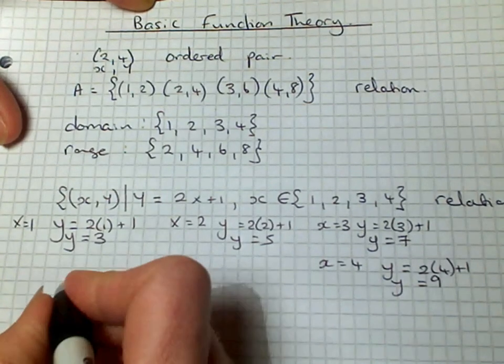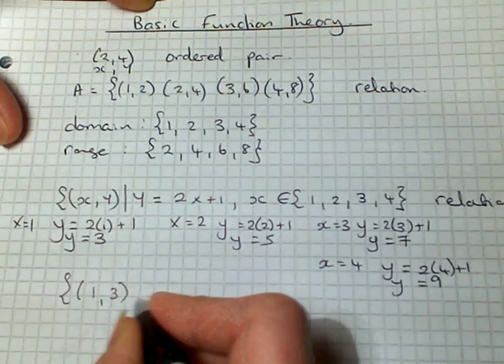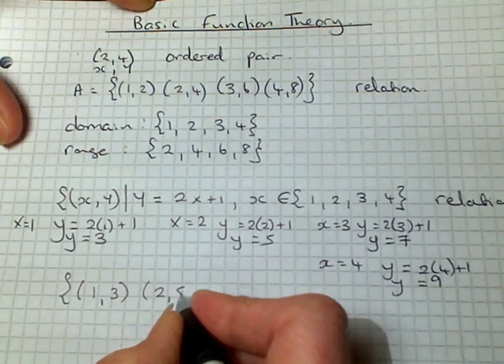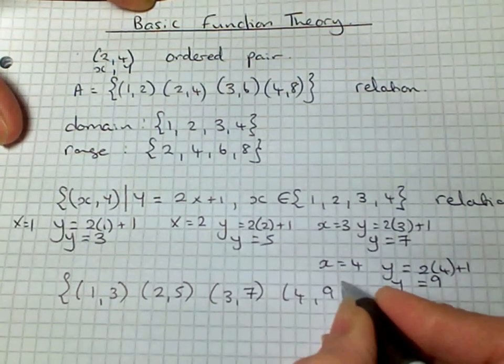So our relation or our ordered pairs are (1, 3), (2, 5), (3, 7), and (4, 9).